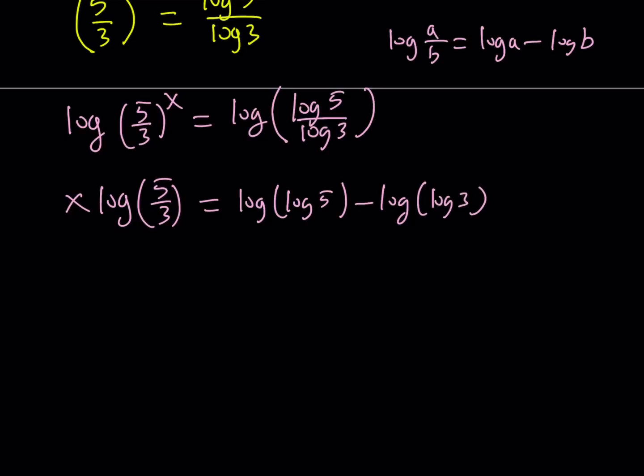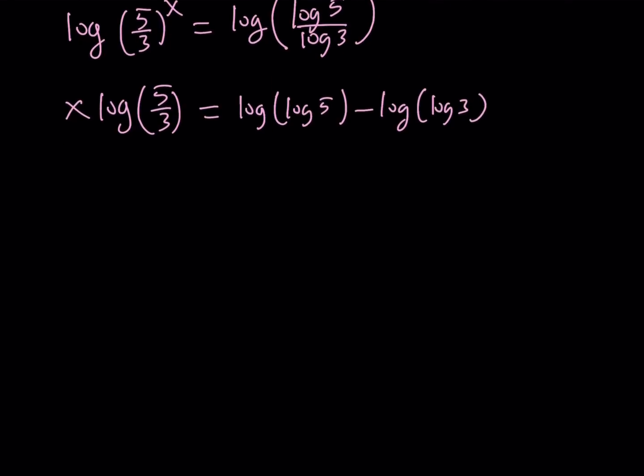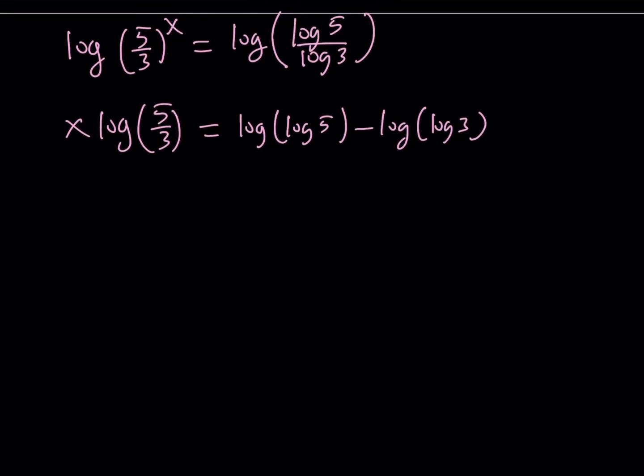By the way, when I say log, I'm talking about base 10, not base e. So, we can divide both sides by this expression, log 5 over 3. Or, we could probably write it using the same property first. So, we can separate the log 5 over 3 into log 5 minus log 3.